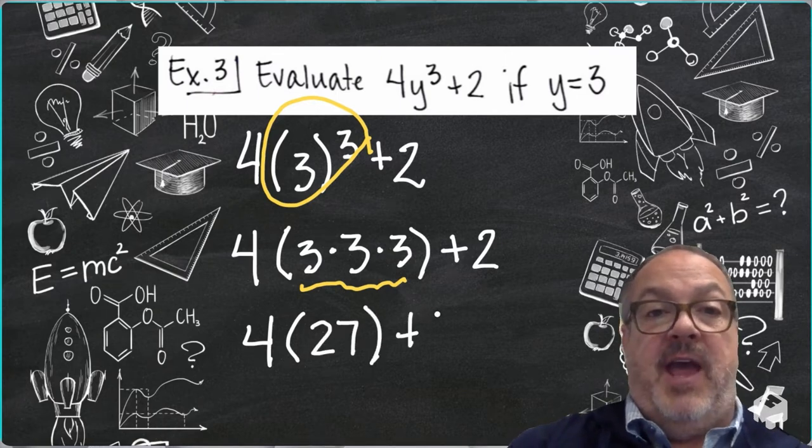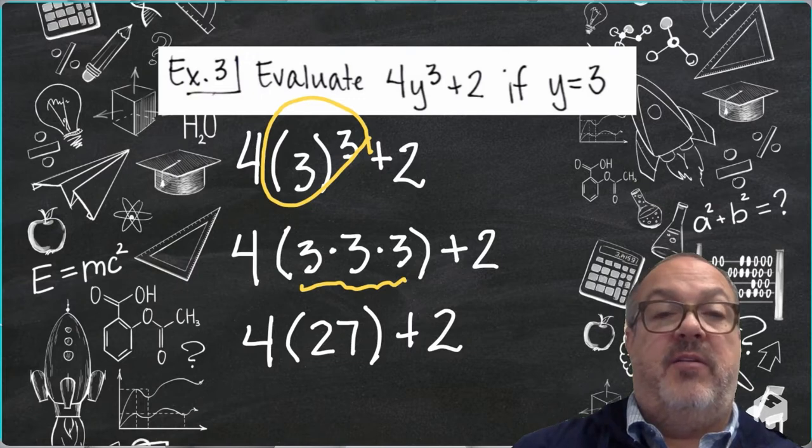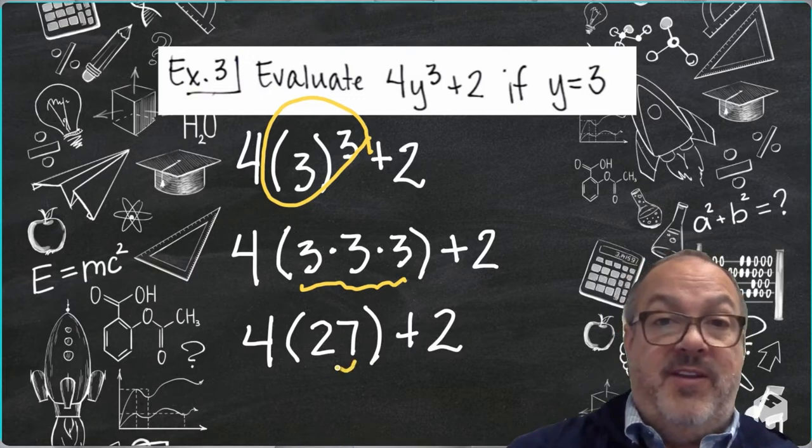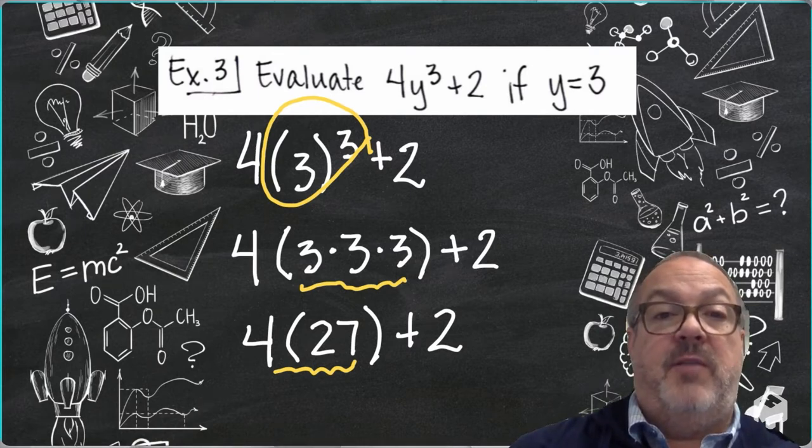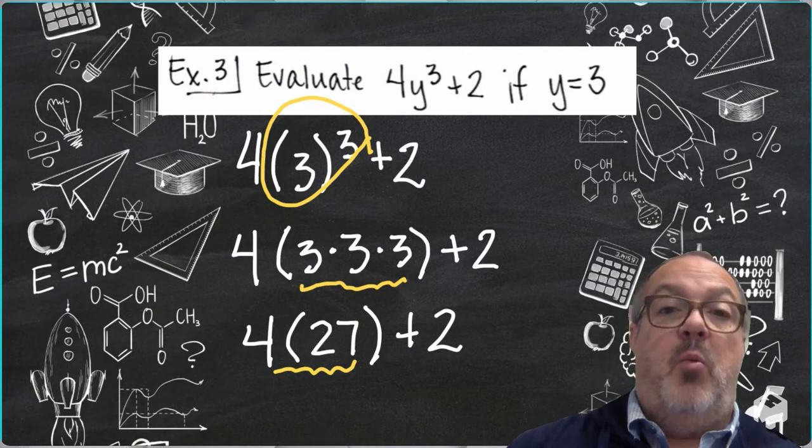And then I'm going to add 2 onto that. All right, 4 times 27. That's the part I have to do first. So 4 times 27 is 108.